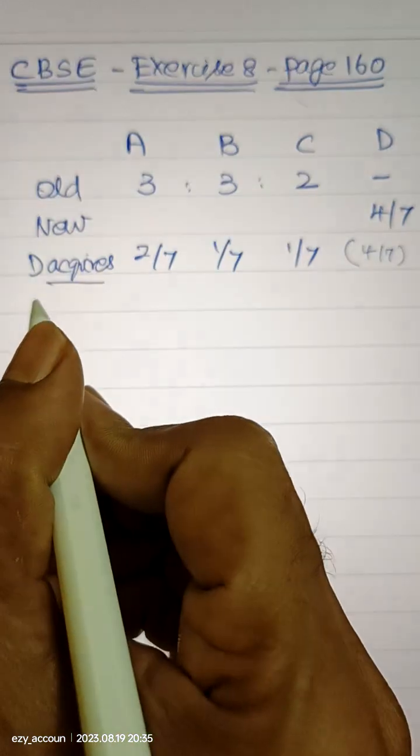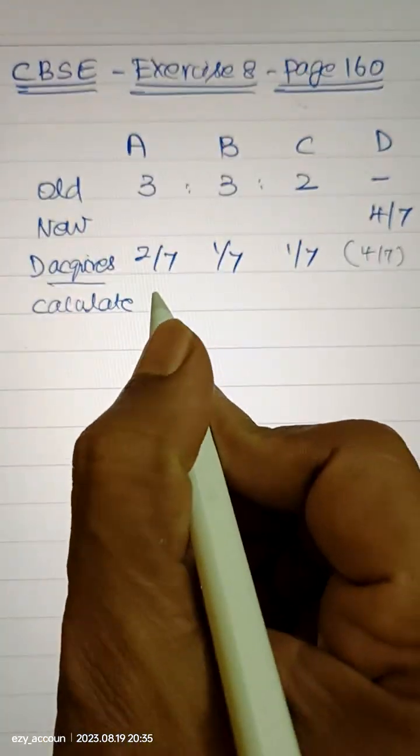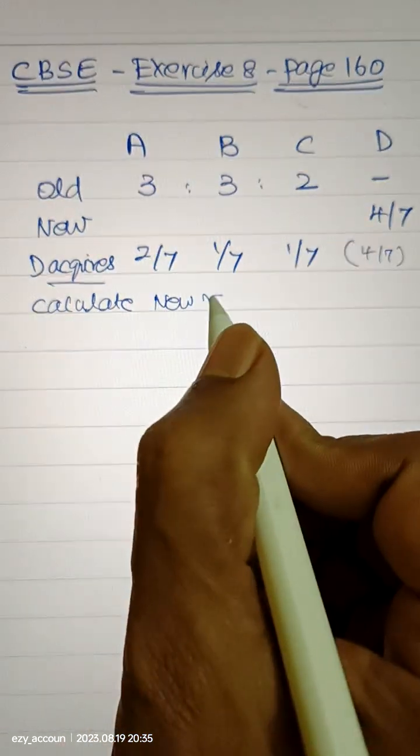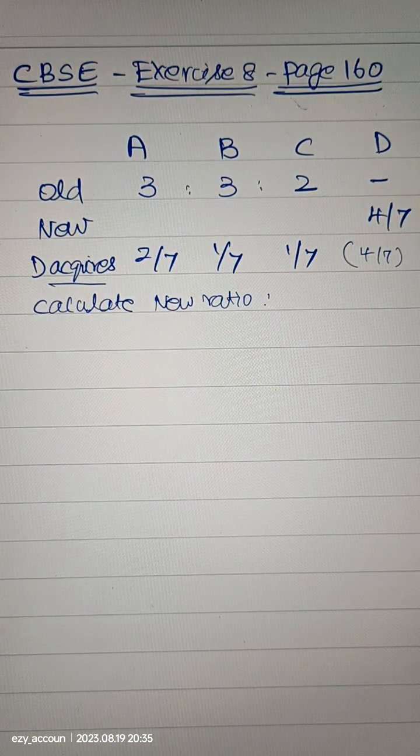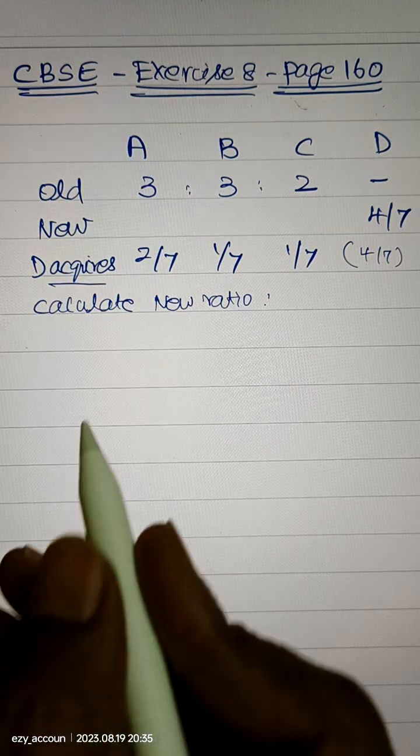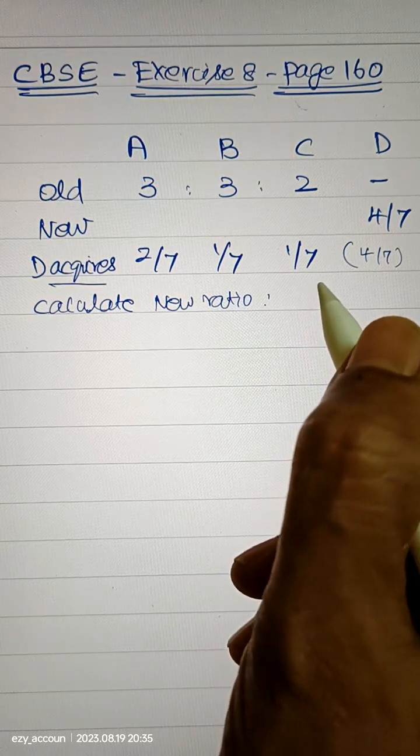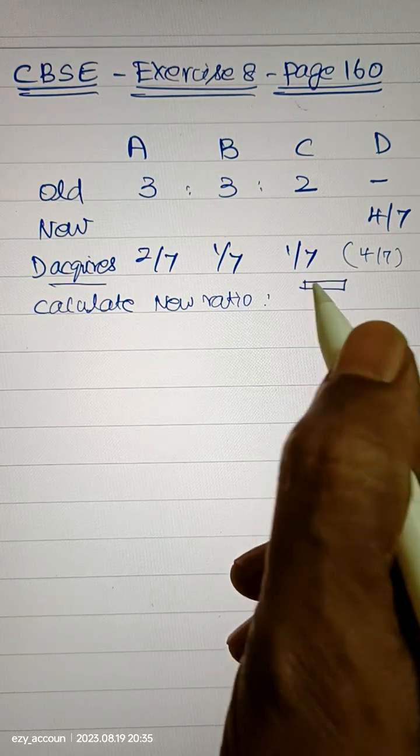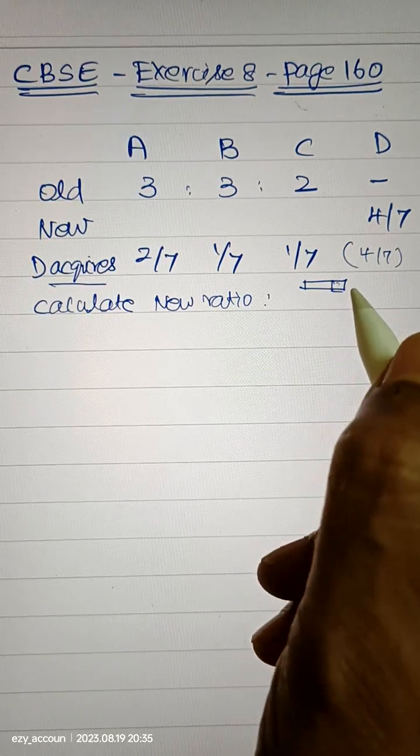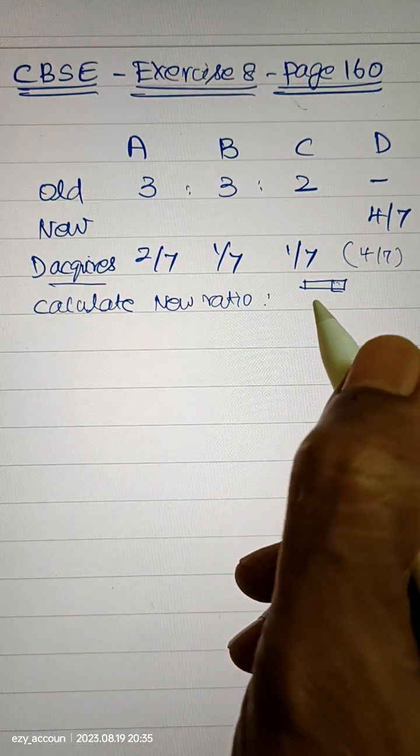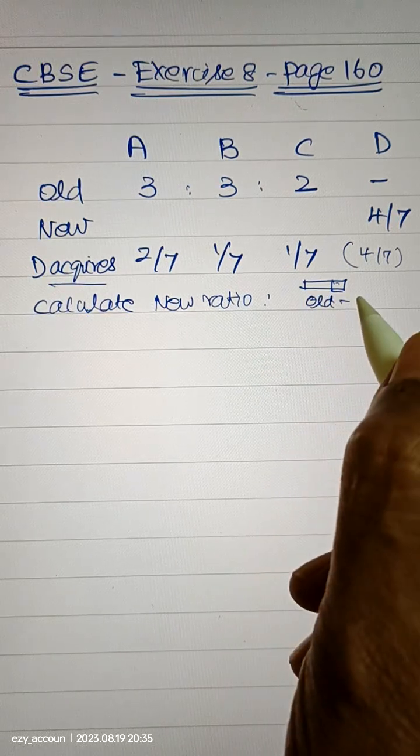Now we have to find out what is the new ratio. Calculate new ratio. You also have notebook and pen with you, let us do together. So what is new ratio? You have something earlier, let's say you have a big bar and one person comes and takes something from you, a portion from it.